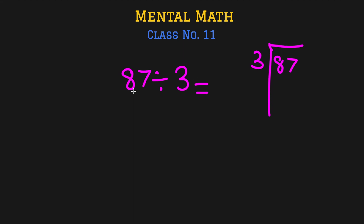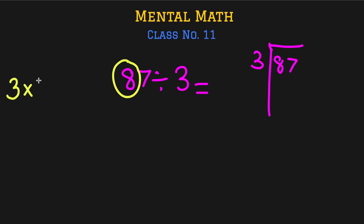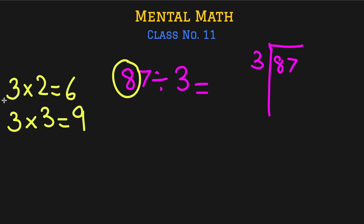So 87 divided by 3 — we are going to do this in our brain. We look at the first digit, which is 8. Since 8 is greater than 3, it can be divided. We check the table of 3: 3 times 2 is 6, and 3 times 3 is 9, which is too big. So we use 2, and 3 times 2 gives us 6.